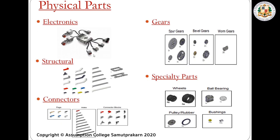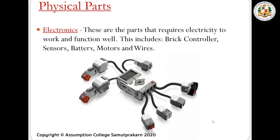These are the physical parts of the robot. First we have the electronics — all the parts that use electricity. We have the structural parts to build the body of the robot. We have connectors to connect the pieces together. We have gears — spur gears, bevel gears, worm gears — to create movement. We have specialty parts to create special or complex robots. We have wheels, ball bearings, pulleys, rubber, and bushings.